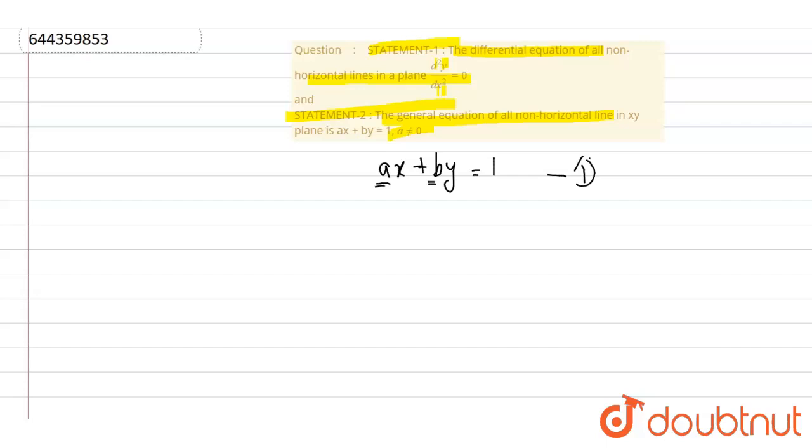So now when we differentiate it for the first time, we get here a × 1 + b(dy/dx) equals to zero. When we differentiate for the second time, we get zero plus b(d²y/dx²) equals to zero, or we can also write it as b(d²y/dx²) equals to zero.